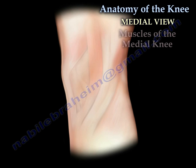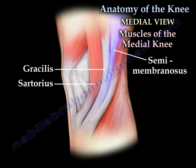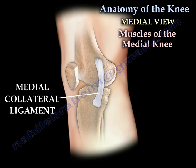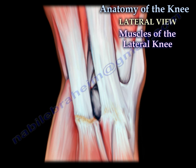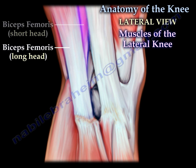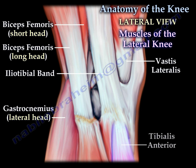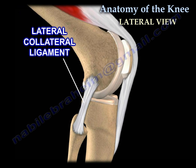On the medial side of the knee, you can find the arrangements of the tendons that insert into the tibia. Here you can see the medial collateral ligament. On the lateral side of the knee, you can see the biceps femoris tendon and the iliotibial band. You can also see the lateral collateral ligament.